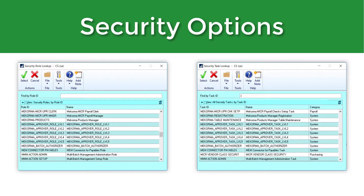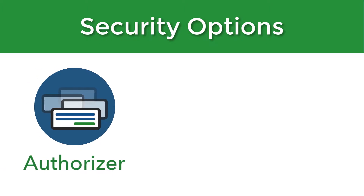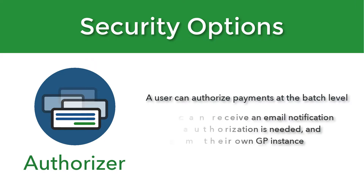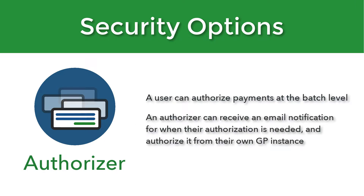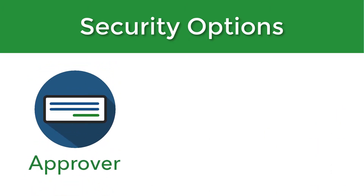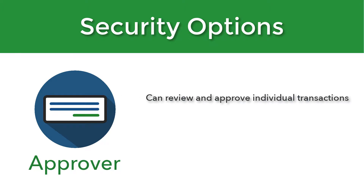Authorization allows any user designated with the role of Mekorma batch authorizer to authorize payments at the batch level. Authorizers can now receive email notification when their authorization is needed on payment batches, and then authorize these batches from their own GP instance instead of entering a password at the desk of the person processing the payments.